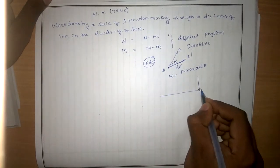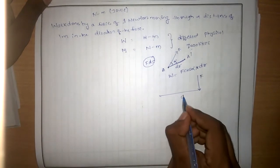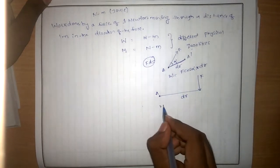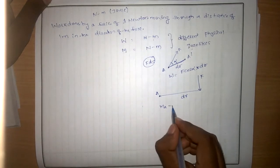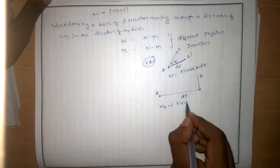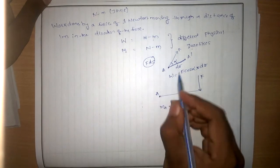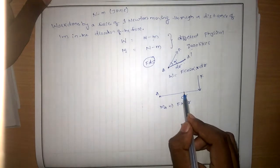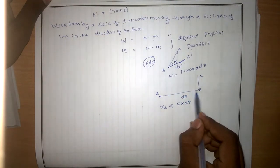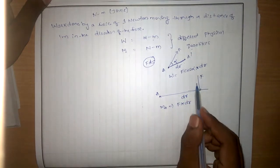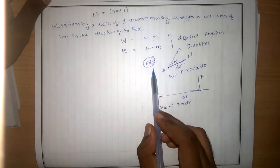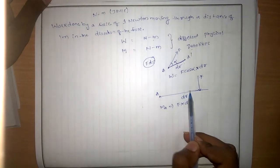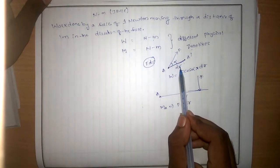Coming to the moment — consider point A. The moment about A is F into dr. In one case, the force and displacement are in the same direction; in another case, the force and displacement are in opposite directions. The product of force and distance is the same, but here the force and displacement are perpendicular, whereas for work they are in the same direction.